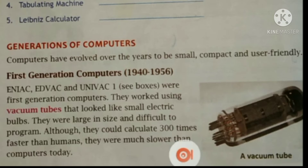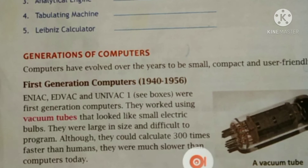The full form of ENIAC is Electronic Numerical Integrator and Computer. EDVAC stands for Electronic Discrete Variable Automatic Computer. The full form of UNIVAC is Universal Automatic Computer 1.